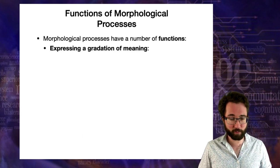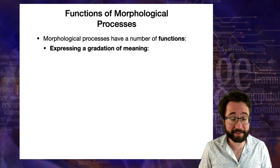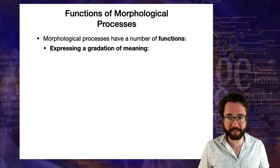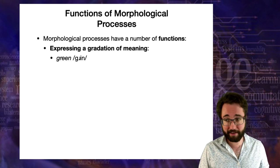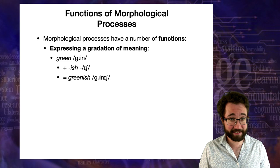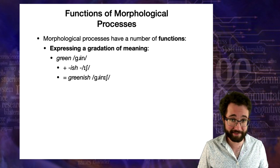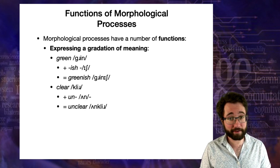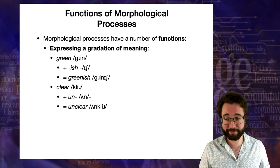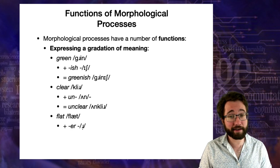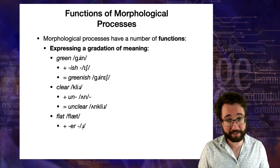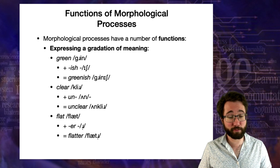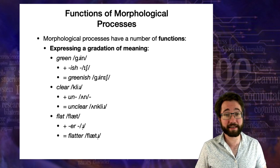Another common function of morphological processes is to express a gradation of meaning — not transforming one category into another, but expressing a bit of gradation. For example, the adjective 'green' can take the suffix '-ish' to get 'greenish', meaning green but maybe not as green as other things. You can take 'clear' and add the prefix 'un-' to get 'unclear', flipping the meaning. You can take 'flat', add the suffix '-er', and get 'flatter', expressing a comparative. These are examples of morphological processes expressing gradations in meaning.